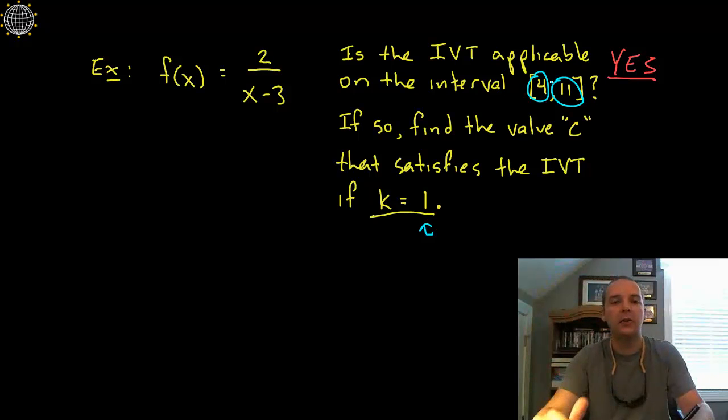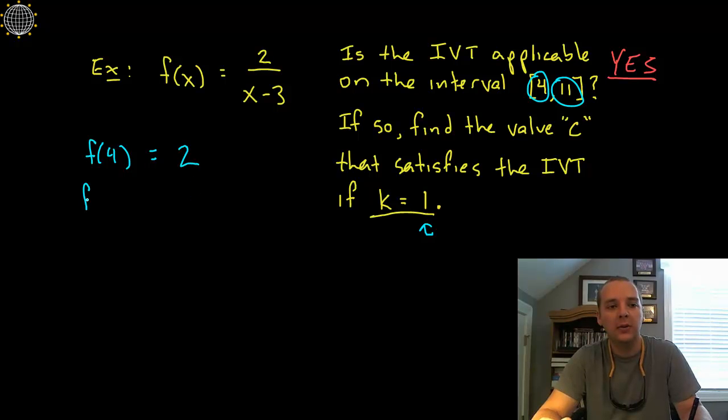But I can find f(4), the y value of 4 by plugging it in, 2 over 4 minus 3, I think that's 2. And I also need to find f(11), let's try that, 11 minus 3 is 8, 2 divided by 8 is 1 fourth.